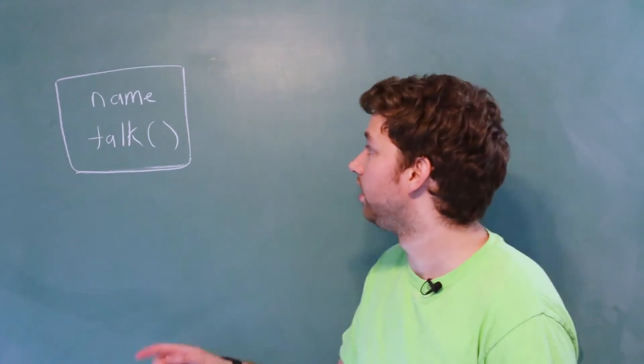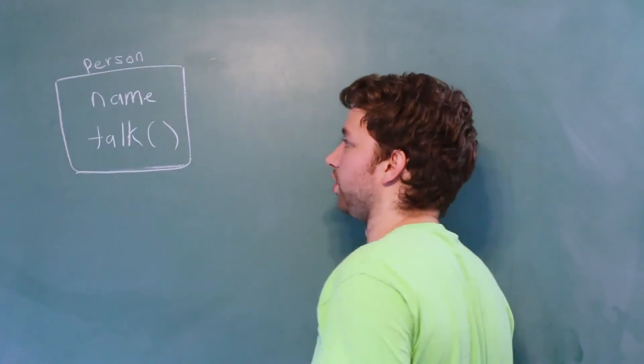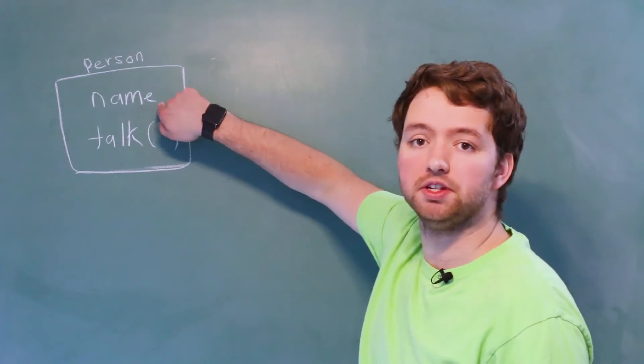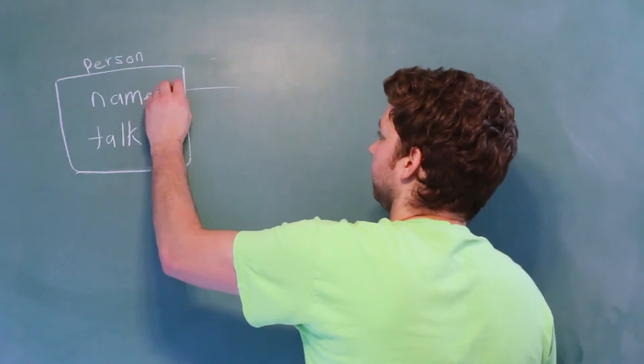So for example, if this is a class, we'll just say this is a person class. We have this name here. This is an example of a field.